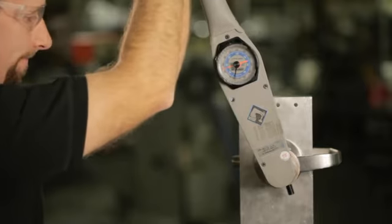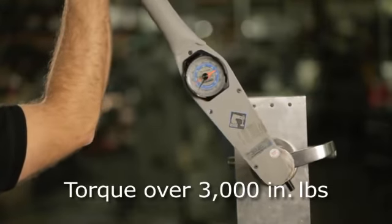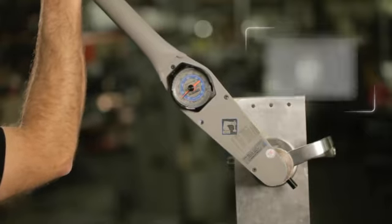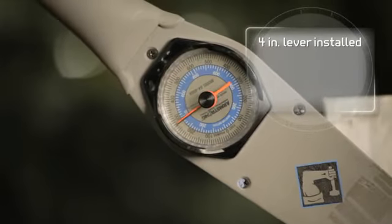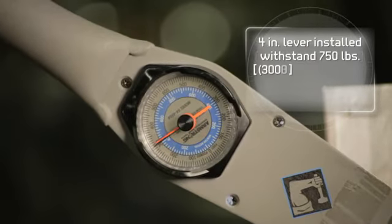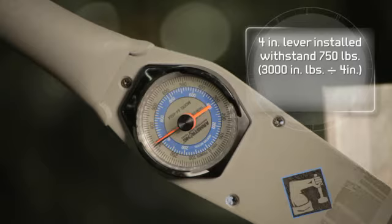Torque testing on the unit exceeds 3,000 inch-pounds. What does 3,000 inch-pounds mean? If a 4-inch lever was installed on your door, the lever would withstand 750 pounds of pressure on the end of the lever before it would break, or the equivalent of three 250-pound football players.